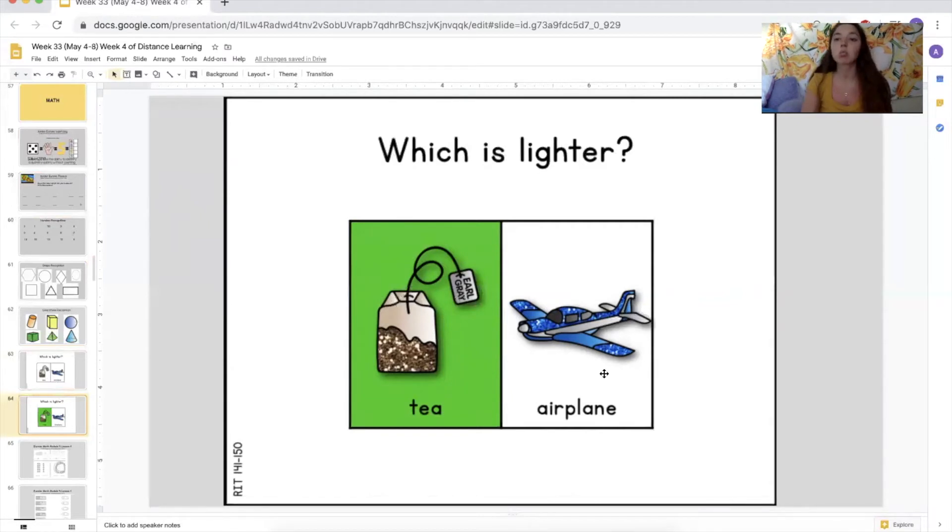The tea, very, very good. The airplane would be so hard to lift. I don't even think if all of our class worked together, we could lift an airplane. Do you? I don't think so. But we could easily lift a little bag of tea, right? Right. That's why it is lighter. Very good, class.